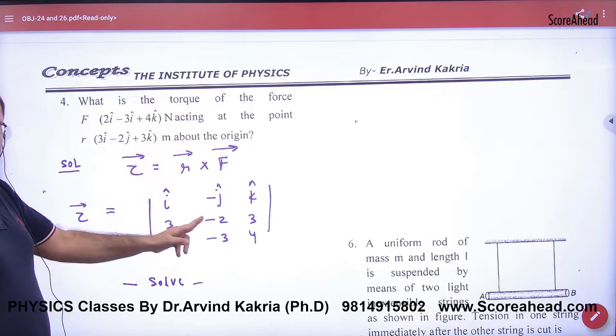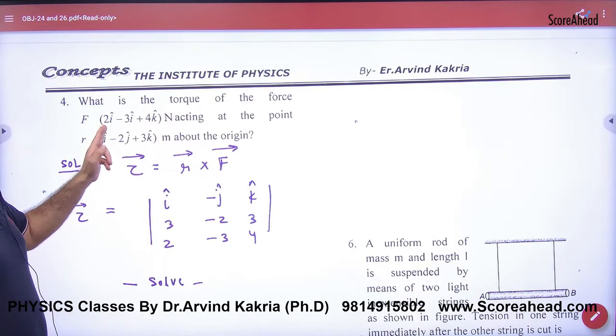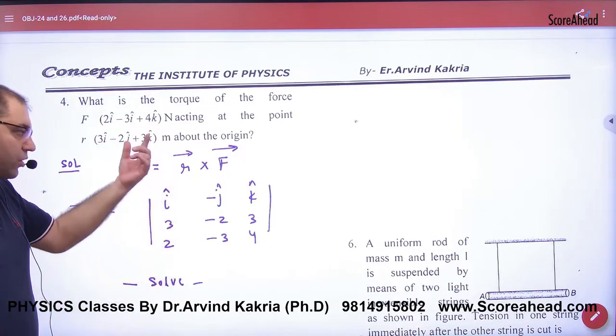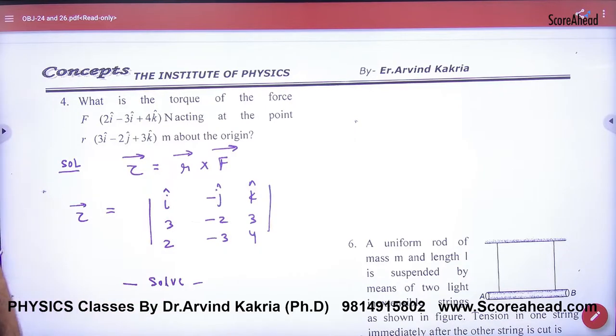You know R-vector coefficients: 3, -2, 3. F-vector coefficients: 2, -3, and 4. What do you need to take this cross product? We have to take this cross product. So here the cross product will be the answer.